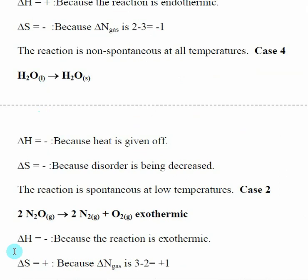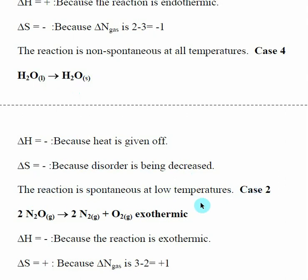Another example: liquid water turning into ice (solid water). To make ice we have to remove heat — like putting it in a freezer — so this reaction is exothermic and delta H is negative. Looking at entropy, we're going from a liquid, where atoms move around, to a solid, where atoms are locked into place, so we're becoming less disordered and delta S is negative. This is Case 2: spontaneous at low temperatures, which makes intuitive sense — water freezes at low temperatures.